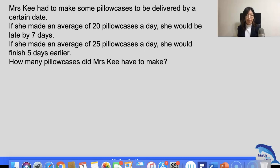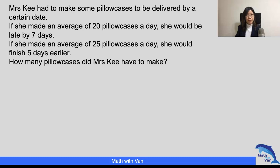Mrs. Key had to make some pillowcases to be delivered by a certain date. If she made an average of 20 pillowcases a day, she would be late by seven days. If she made an average of 25 pillowcases a day, she would finish five days earlier. So how many pillowcases did Mrs. Key have to make?